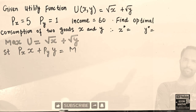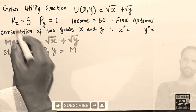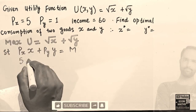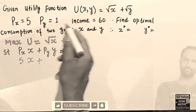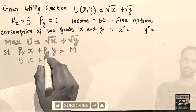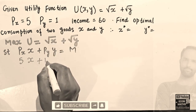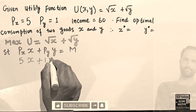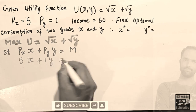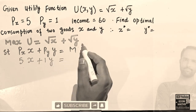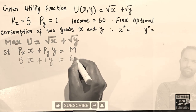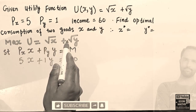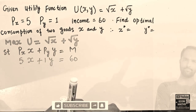The price of x is 5, so we have 5x, and price of good y is 1, so 1 times y should equal total income of 60. So the budget constraint is 5x + y = 60. We want to maximize the utility function subject to this budget constraint.